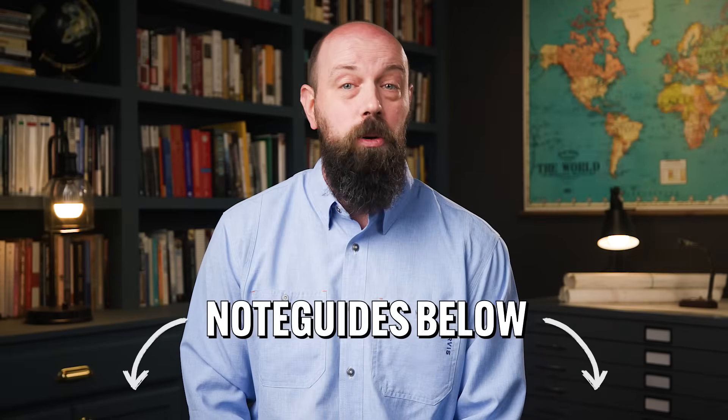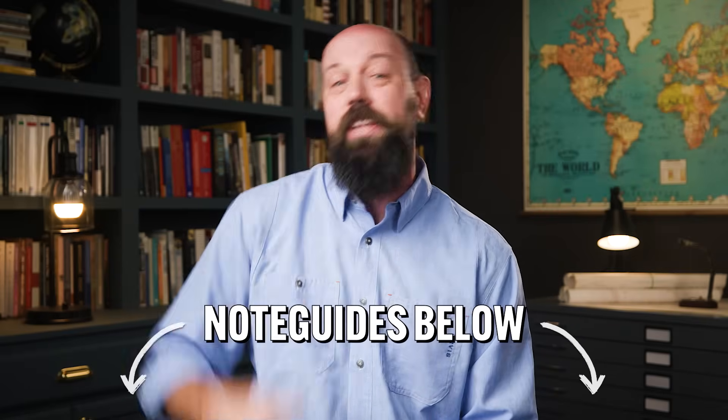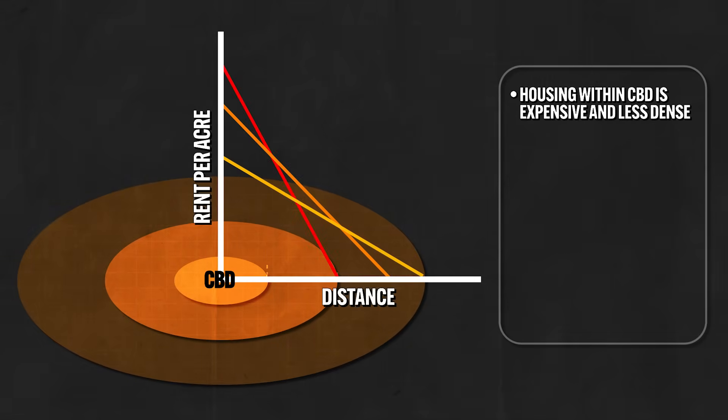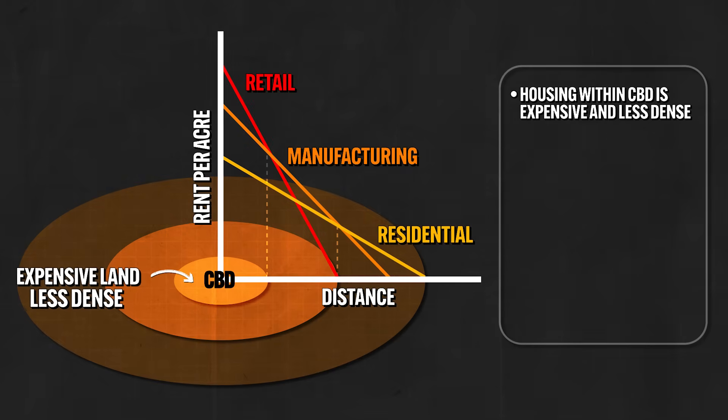On the most basic level, patterns of population density in urban areas basically conform to the principles of bid-rent theory. Housing within the zone of the CBD is expensive and thus less dense.